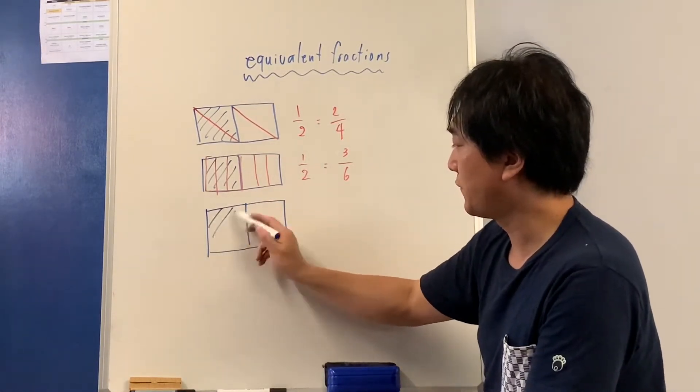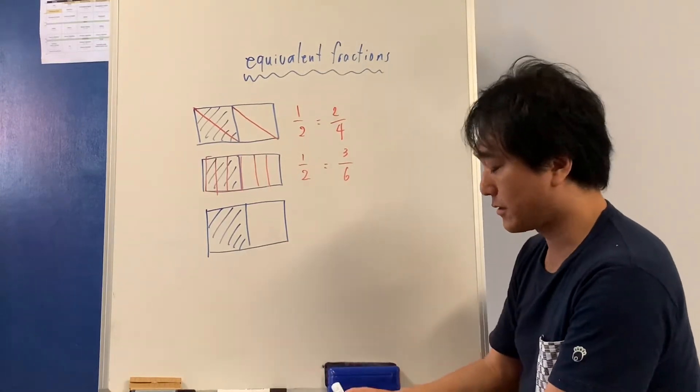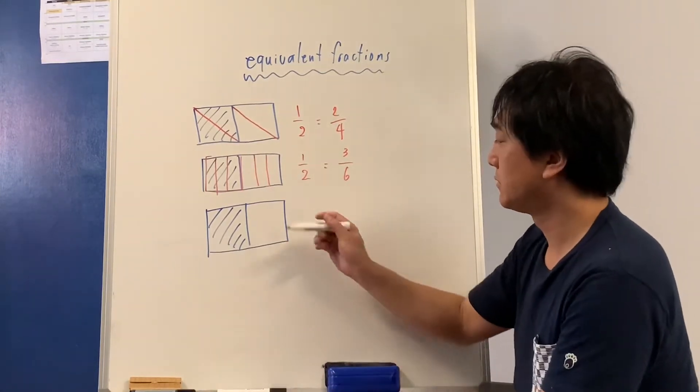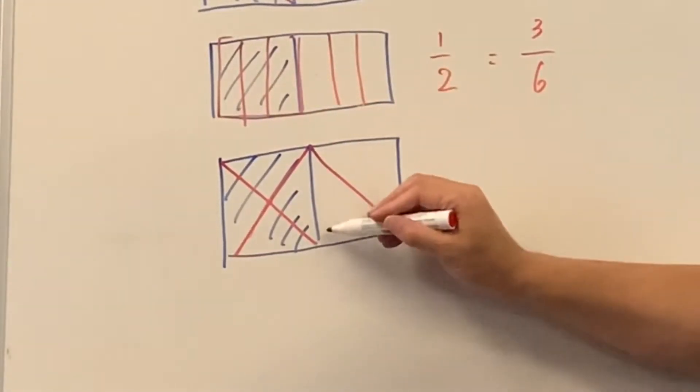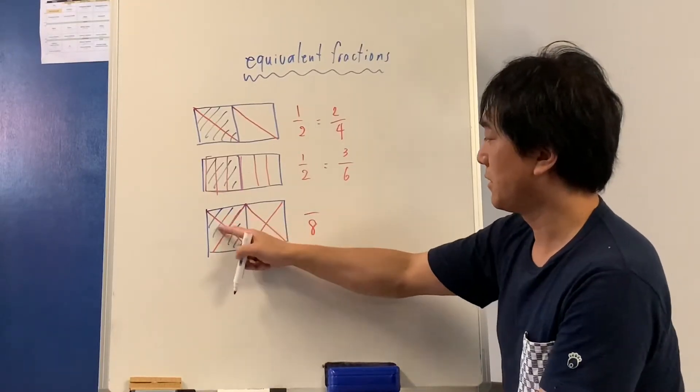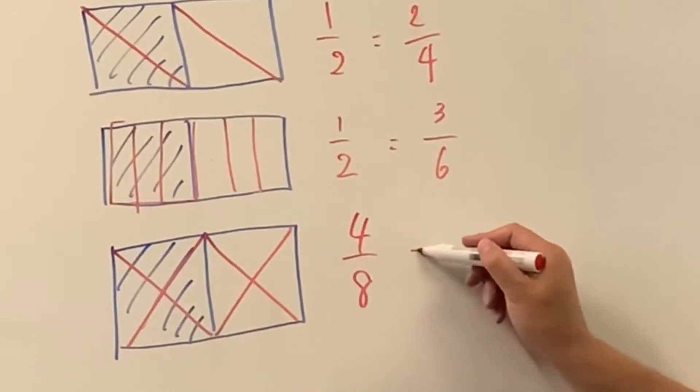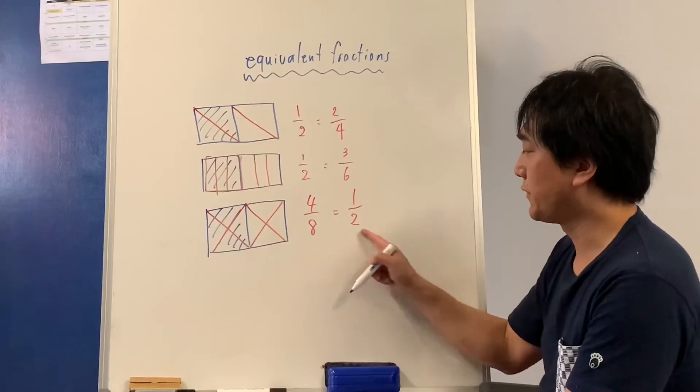Here's one half. I'm going to cut each piece into quarters. Now I have four eight little pieces and four of them are highlighted. So four eighths is equivalent to one half.